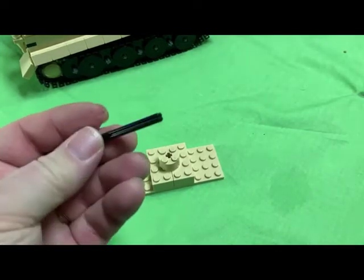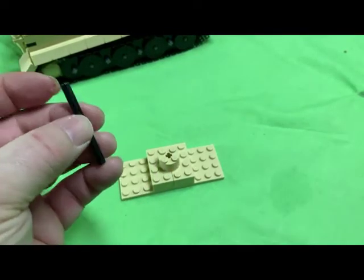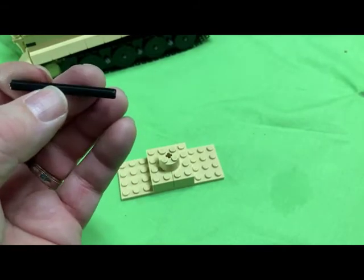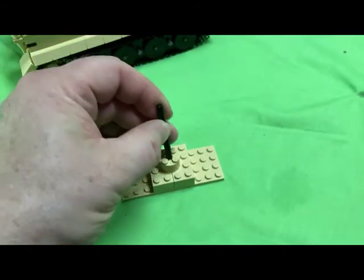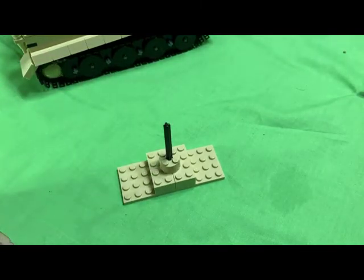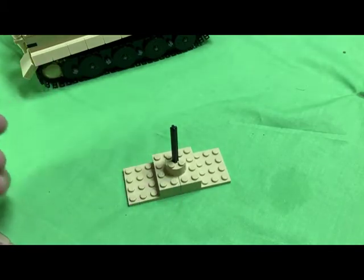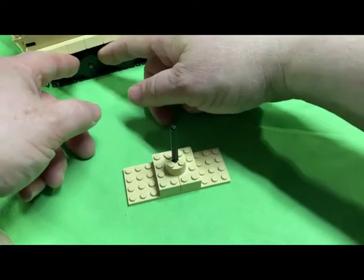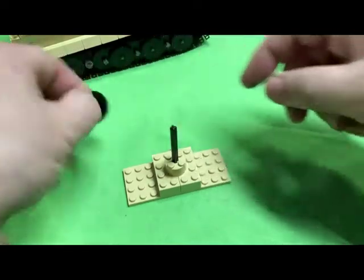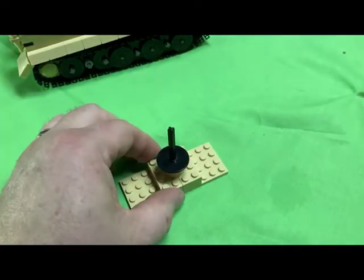Then we're going to take a Technic Axle. So this is a 6L. You can use longer if you want. For doing the Tiger, this will make it a lot easier to apply these stickers. So let's just pop off a wheel here and just take that and slide it right down on top.